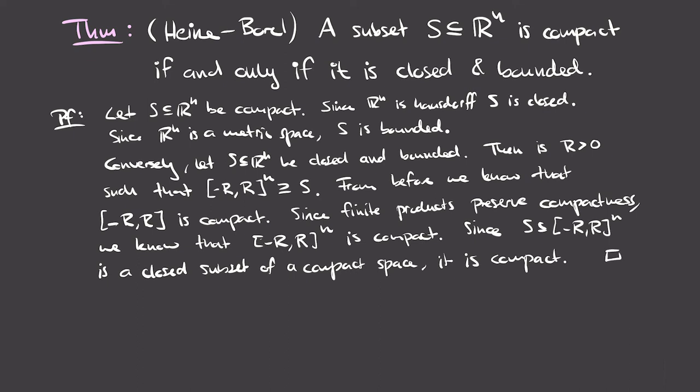This proof uses almost all of the results we proved previously on compactness, making it a really nice theorem that combines everything we've seen. If you had to prove it from scratch without those results it would be quite involved. This also illustrates how we use basic compact spaces like closed intervals to construct proofs that more complicated spaces are compact.